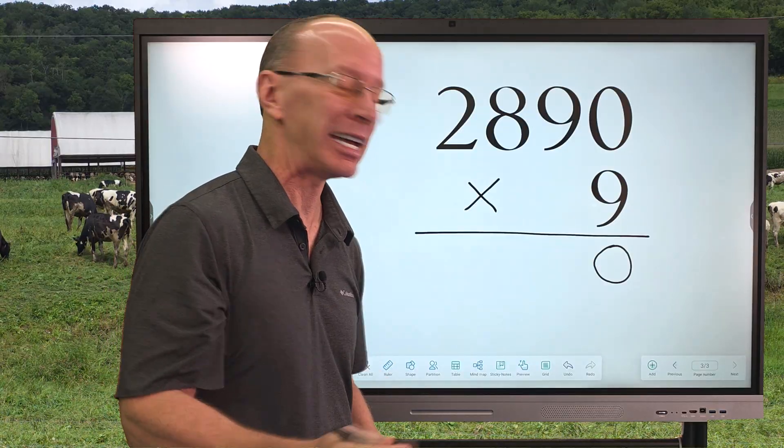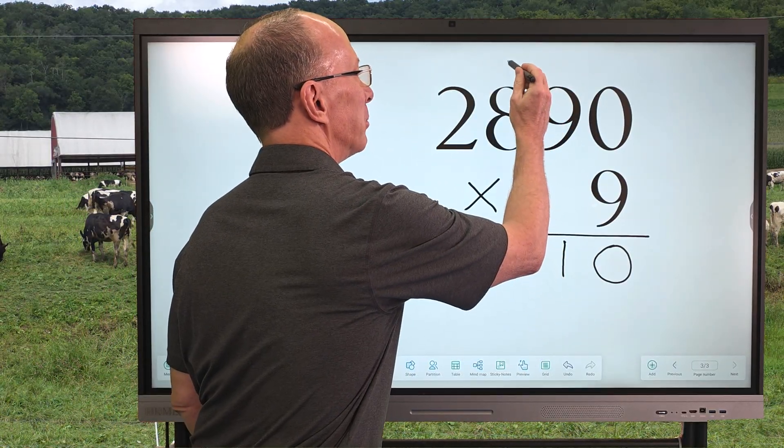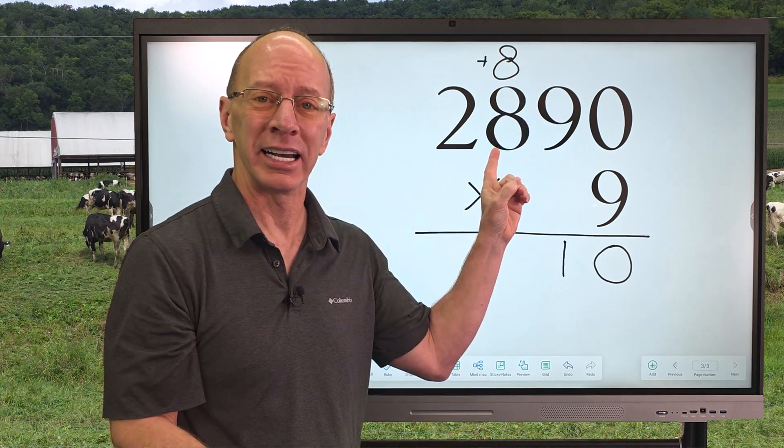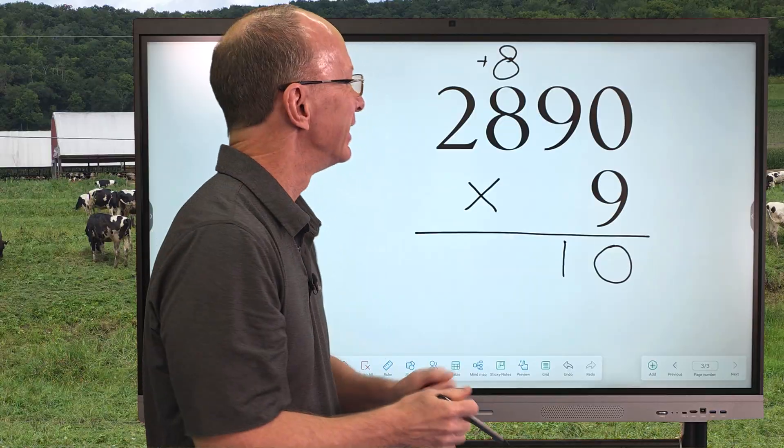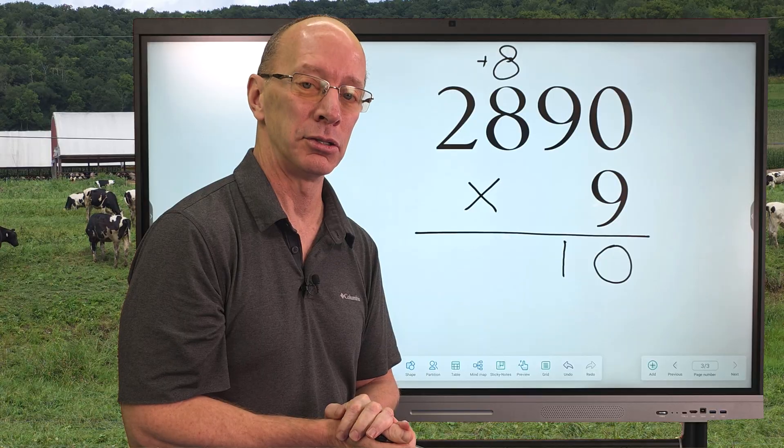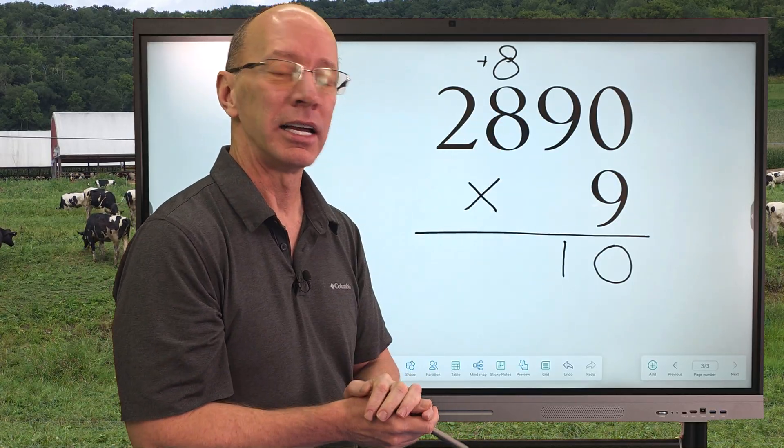Now we're going to work on the next number here. 9 times 9 equals 81. So, I'm going to put the 1 right here and I'm going to put the 8 up here. Remember what I was talking about? Don't add that yet. We're going to add that in a little bit. Now I'm going to take 9 times 8 is 72 and then 72 plus the 8.